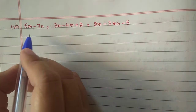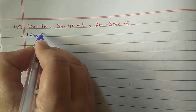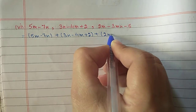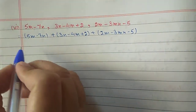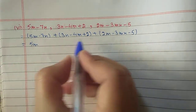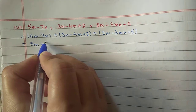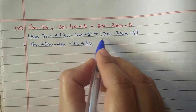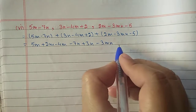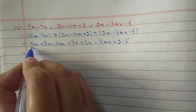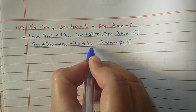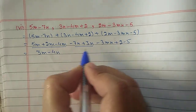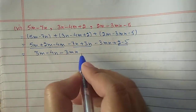Sixth part: 5mn minus 7n plus 3n minus 4m plus 2, and plus 2m minus 3mn minus 5. Taking like terms together: 5mn and minus 3mn; minus 4m and plus 2m; minus 7n and plus 3n; constants plus 2 and minus 5. Simplifying: 5 minus 3 is 2mn; minus 4 plus 2 is minus 2m; wait — actually minus 7 plus 3 is minus 4n; minus 3mn as it is; 2 minus 5 is minus 3.